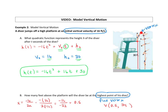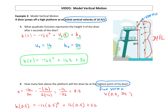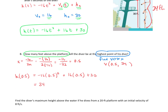That 34 feet is above the water. They asked us how many feet above the platform the diver will be. The platform is 30 feet above the water, and our diver reaches 34 feet above the water. So we just find the difference: take the total height of 34 feet, subtract the 30 feet of the platform, and we get 4 feet. The diver is 4 feet above the platform at the highest point.